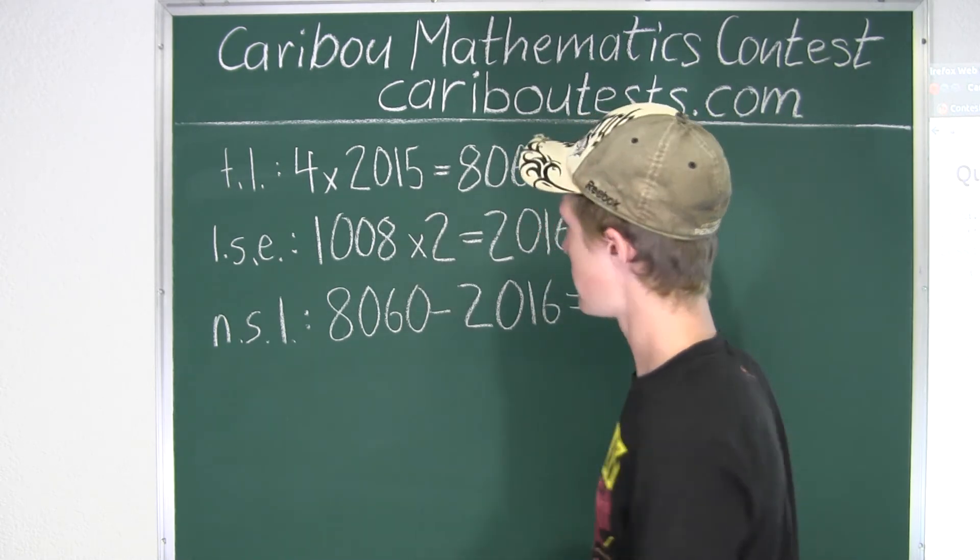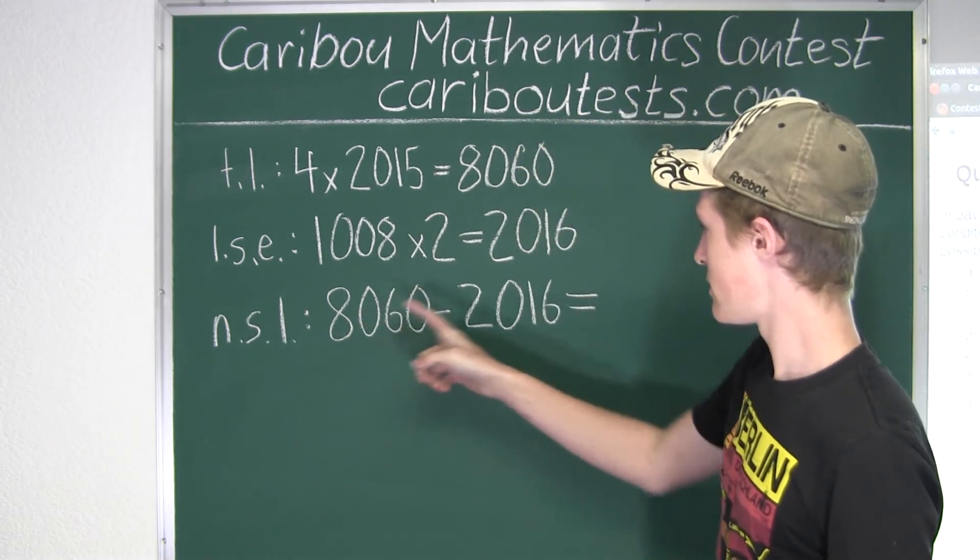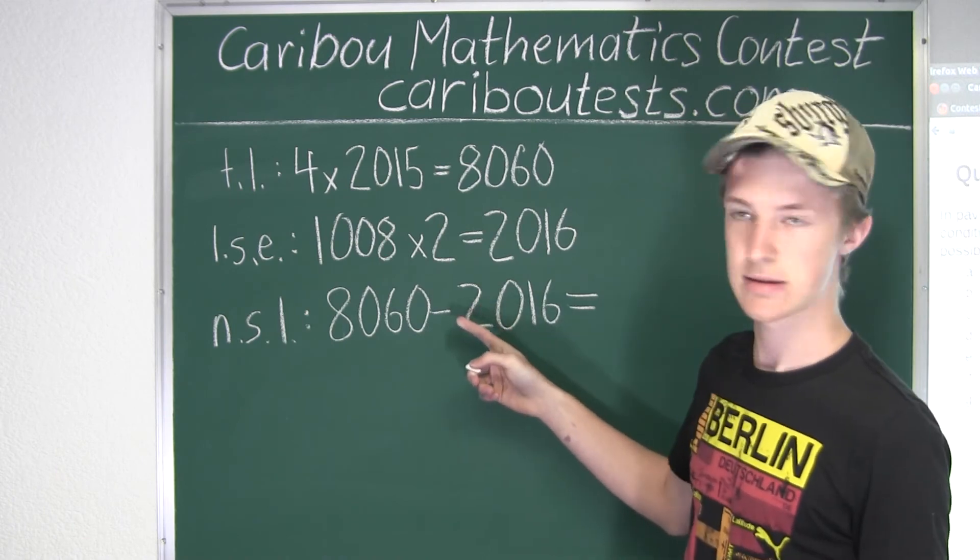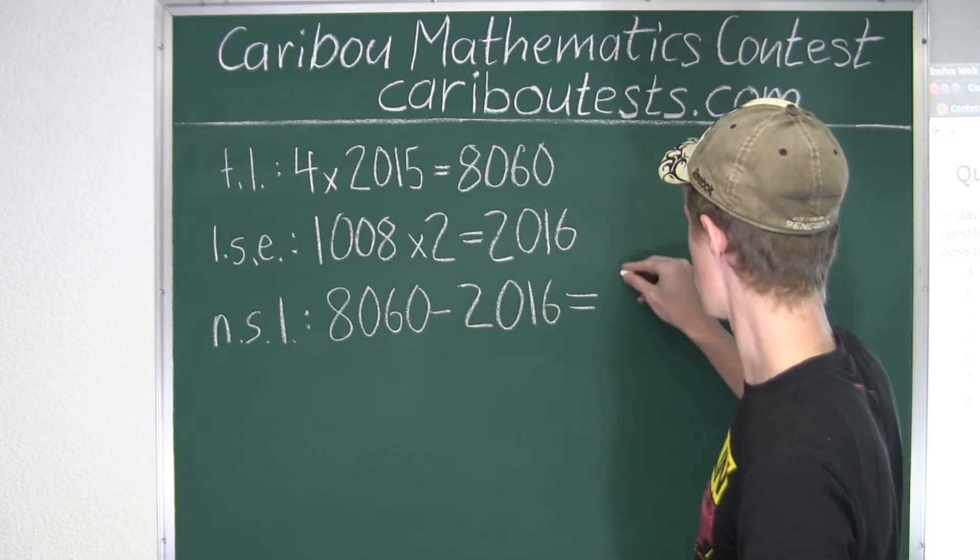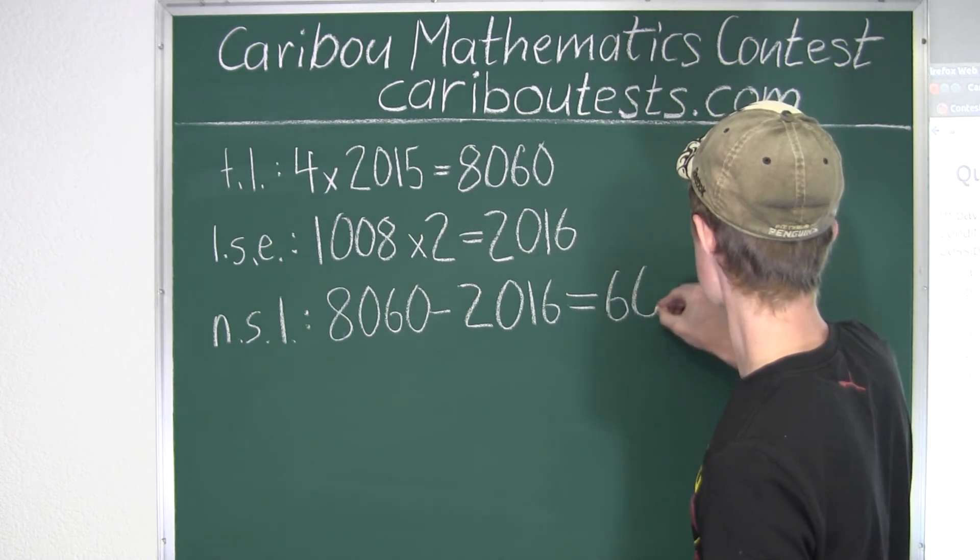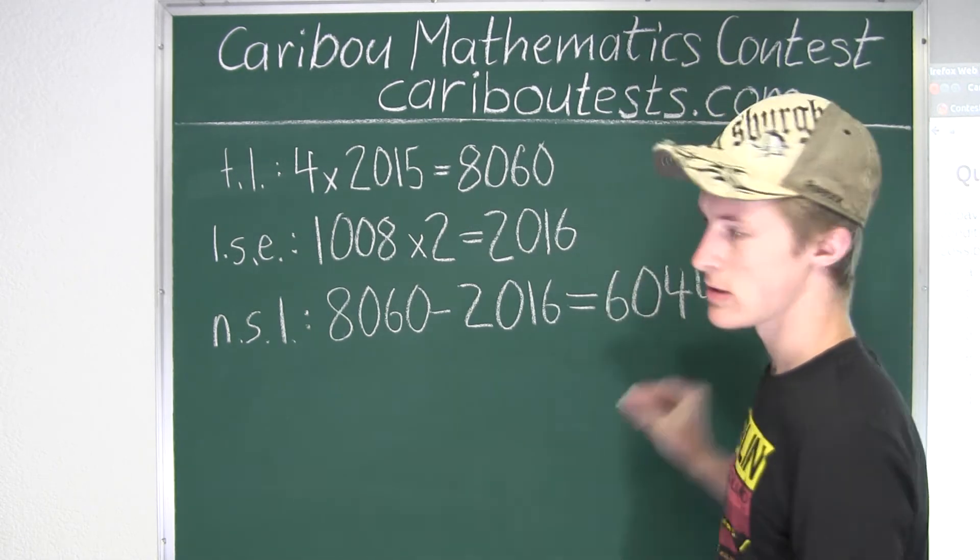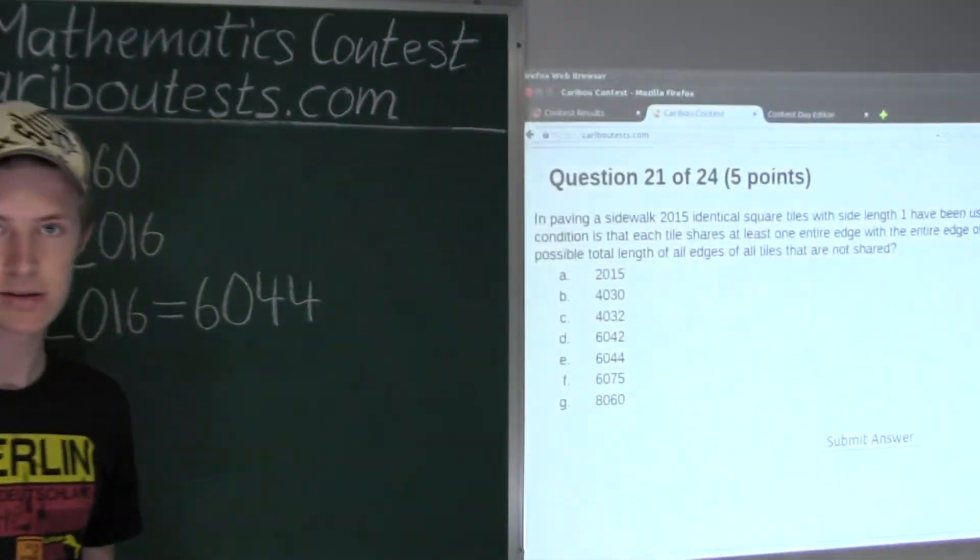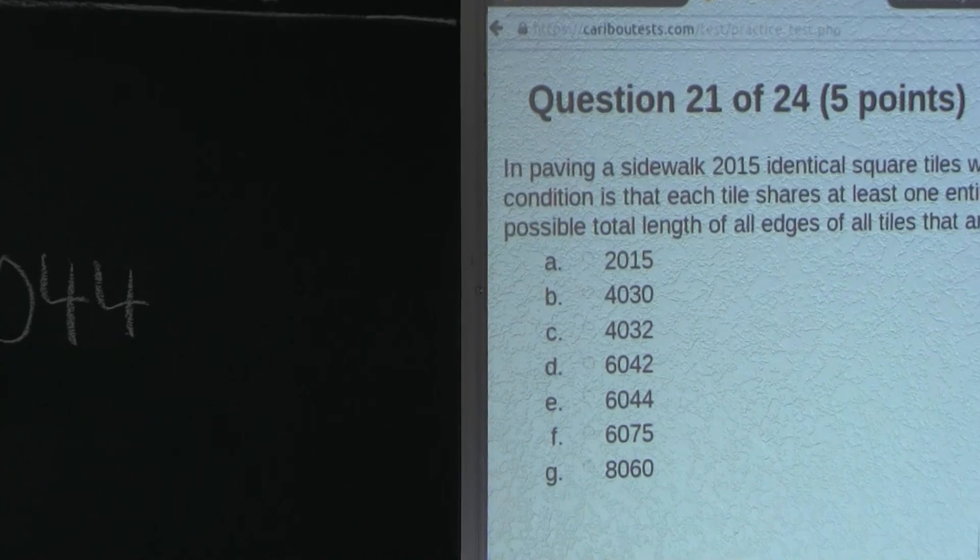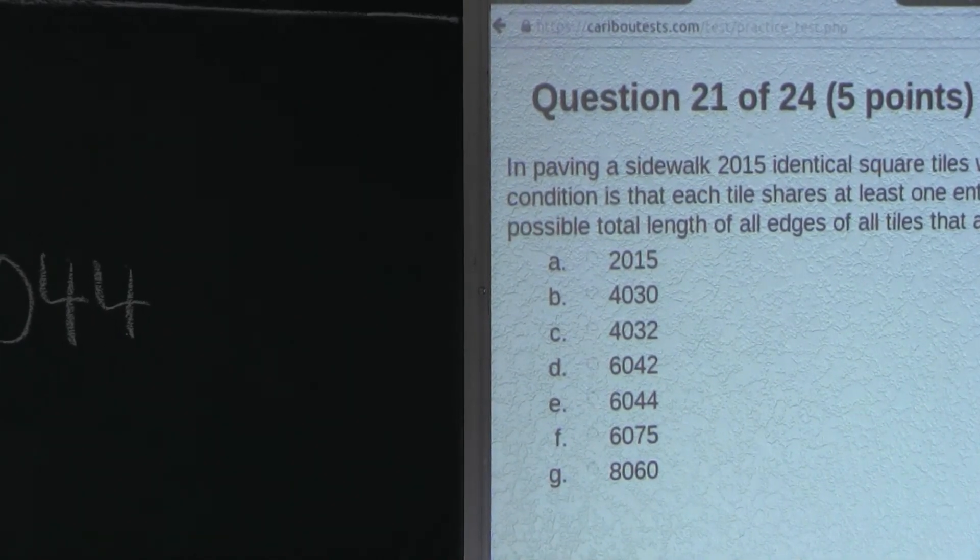And that gives us 8,060 minus 2,016. Therefore, the largest possible total length of all edges that are not shared is 6,044.